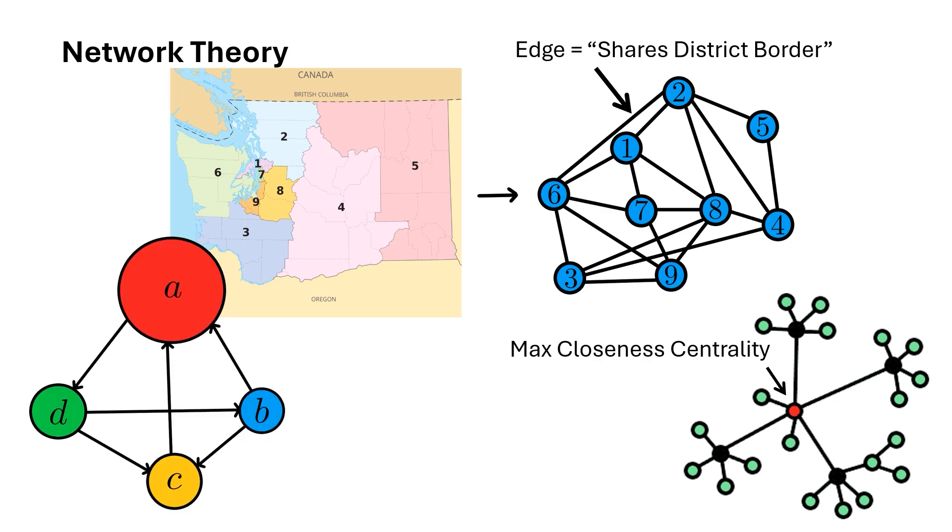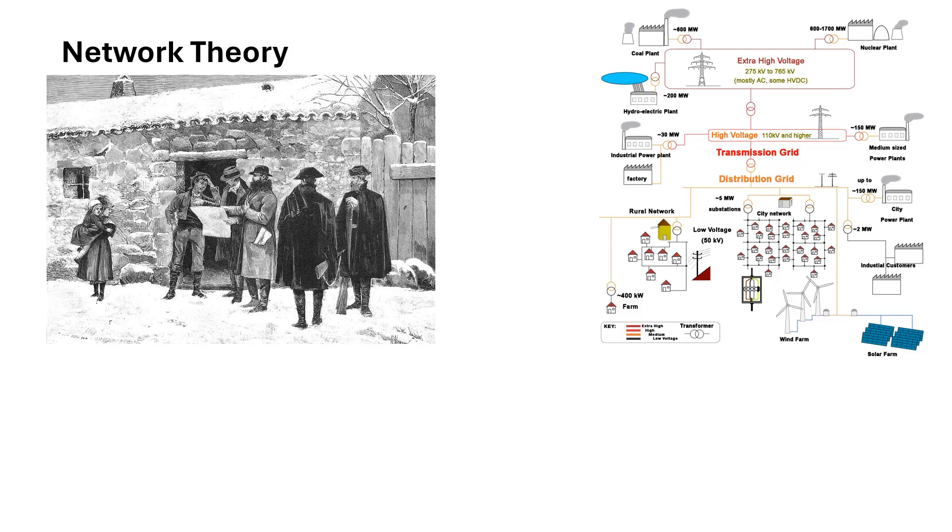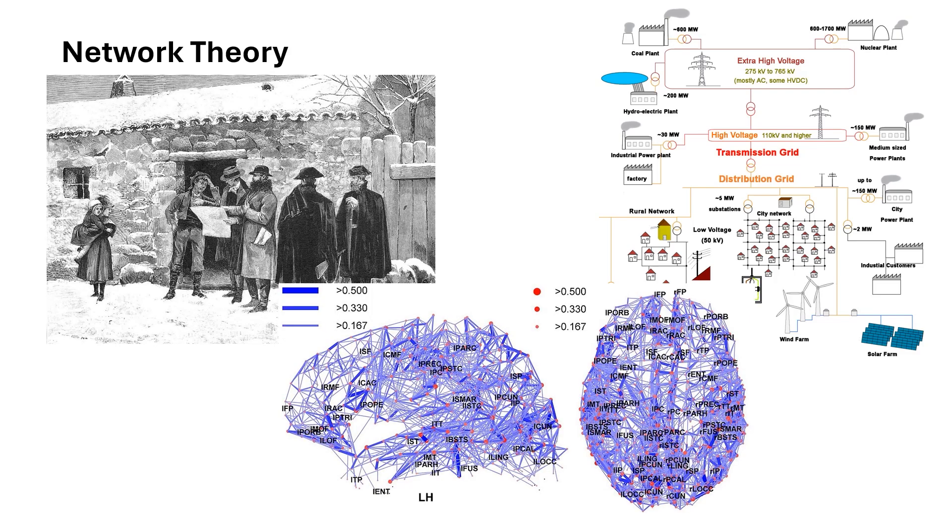For example, a network of web pages where the web pages are nodes and the edges are links between web pages can be ranked according to a centrality measure known as page rank, which was developed by Google and is one of the primary ways that search engines will list results. Applications of network theory include electrical grid analysis, social network analysis, biological network analysis, and more.